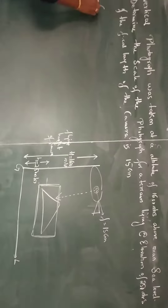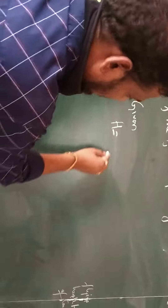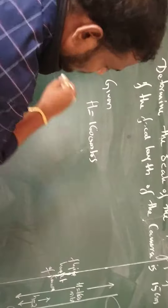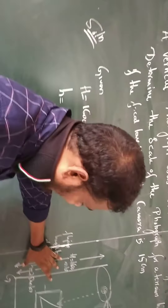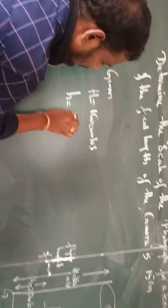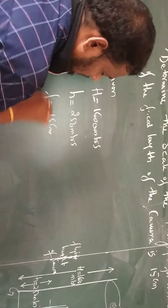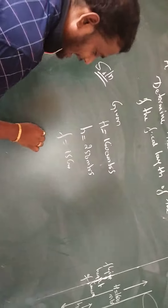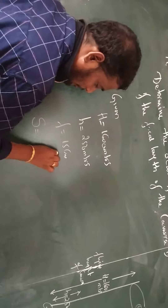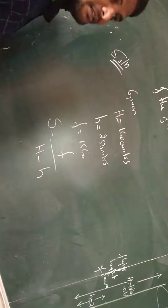The given data: capital H is the flying height of the camera, that is 1600 meters; small h is the elevation of the object, that is 250 meters; and the focal length f is 15 cm. We need to find the scale. The scale S is given by f divided by capital H minus small h.